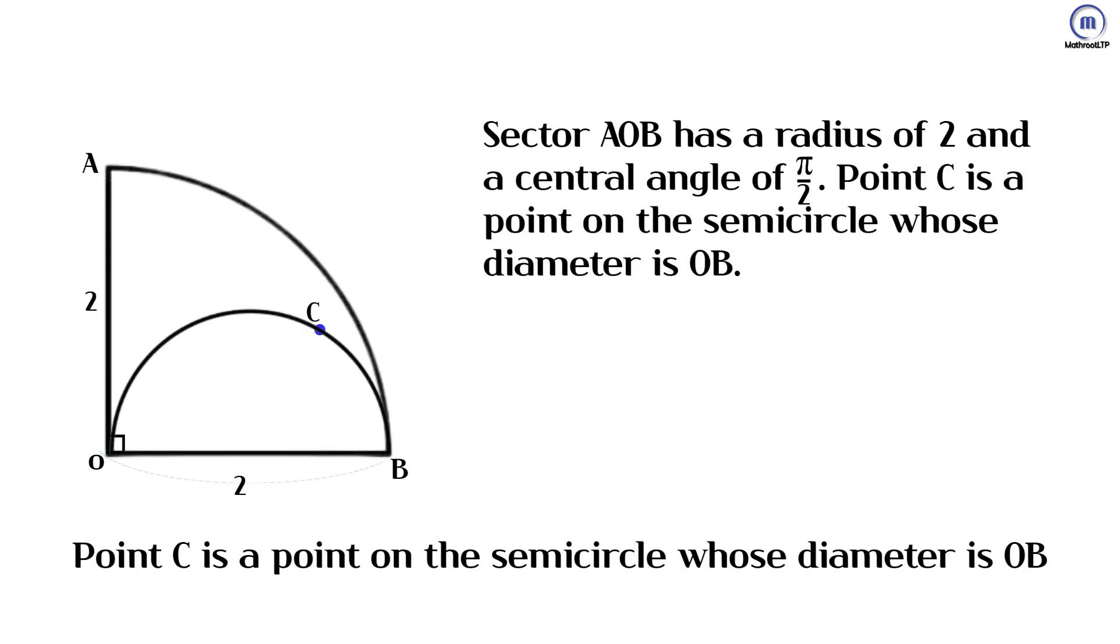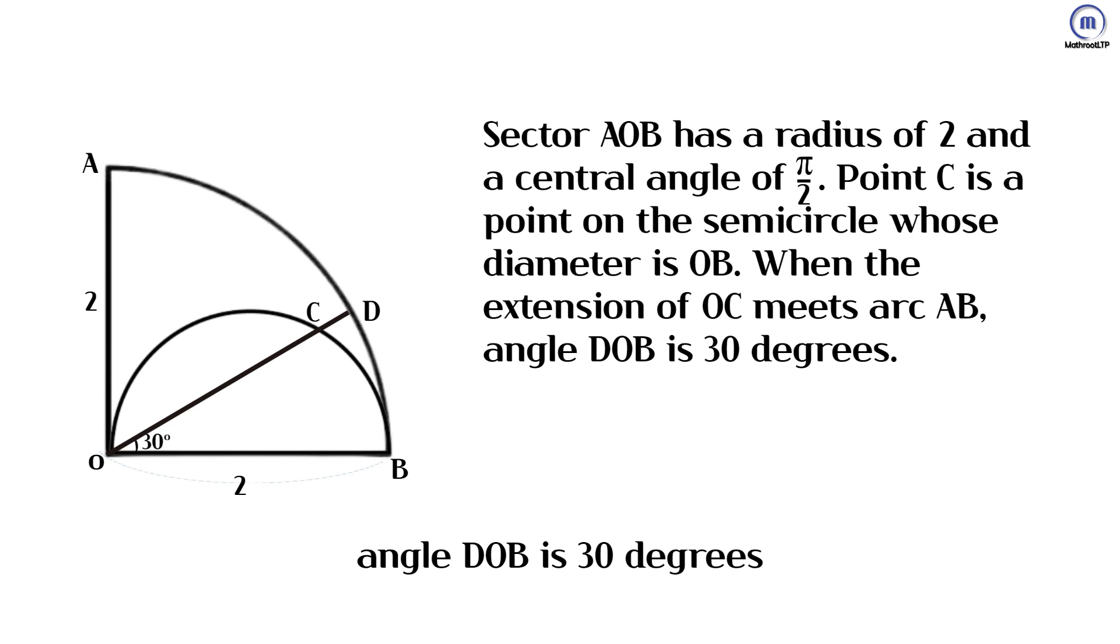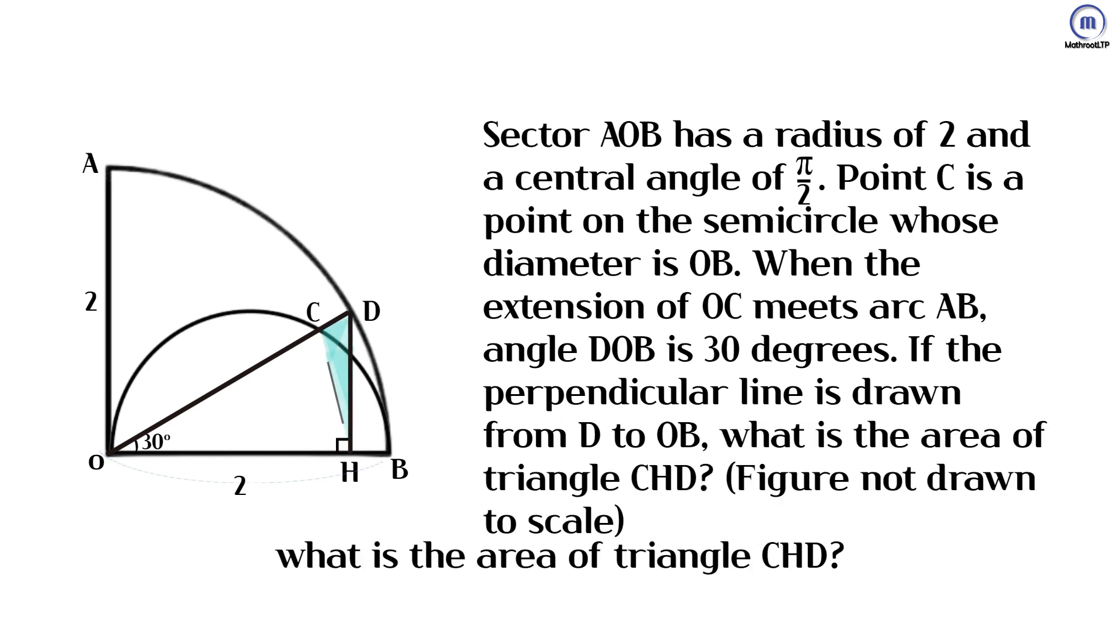Point C is a point on the semicircle whose diameter is OB. When the extension of OC meets arc AB, angle DOB is 30 degrees. If the perpendicular line is drawn from D to OB, what is the area of triangle CHD?